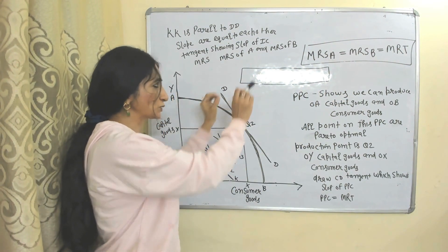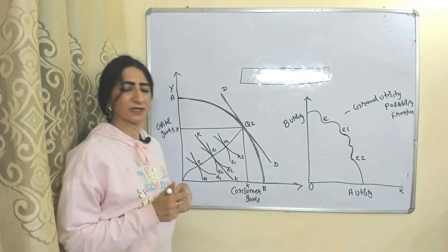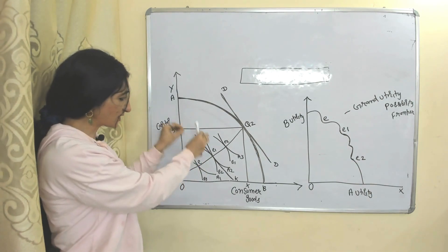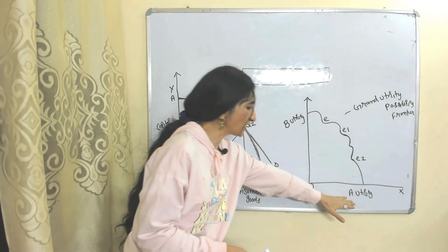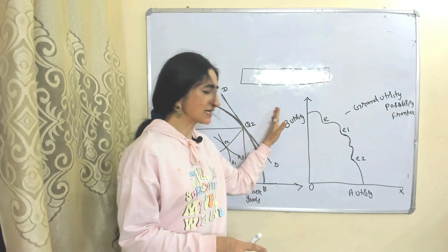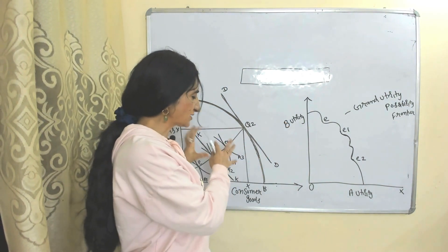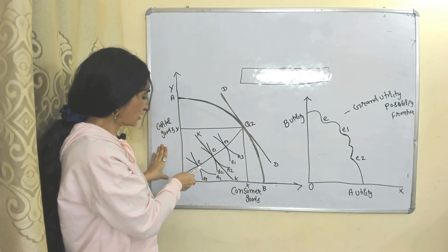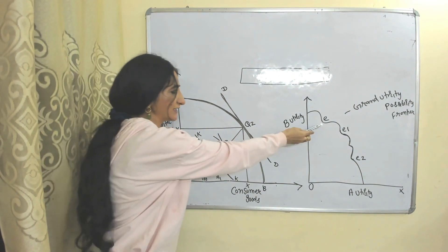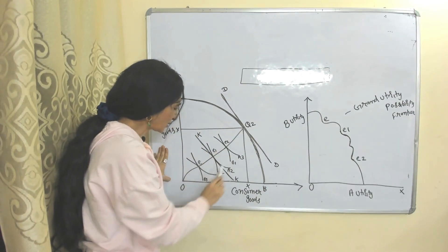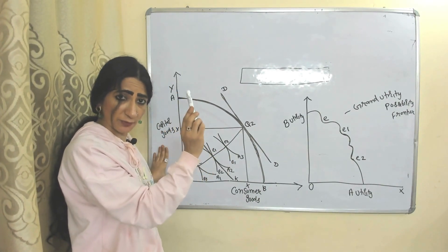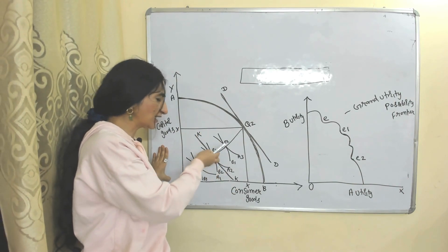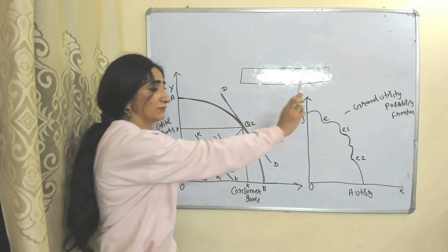So at point Q2 this diagram satisfies our Pareto optimality condition. Now we will see how to draw the Grand Utility Possibility Frontier from this diagram. On the x-axis we have utility of A, and on the y-axis we have utility of B. We will take points E, E1, and E2 — all these points show Pareto optimality, as we have already proved this diagram fulfills the condition of Pareto optimality.